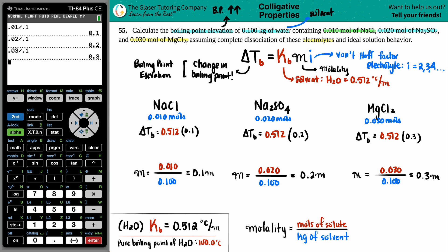The last step is the Van't Hoff factor i, which comes from how many ions you get when your solute breaks apart. For NaCl, the split gives Na⁺ and Cl⁻ — one sodium and one chlorine, so two total ions, meaning i equals 2.